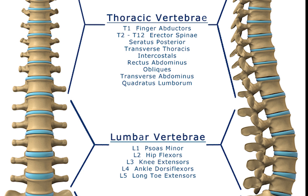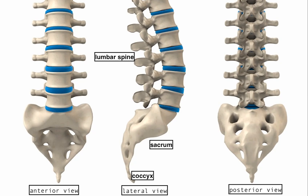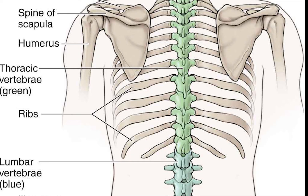The articulating vertebrae are named according to their region of the spine. There are 7 cervical vertebrae, 12 thoracic vertebrae, and 5 lumbar vertebrae. The number of those in the cervical region is only rarely changed, while that in the coccygeal region varies most. Excluding rare deviations, the total number of vertebrae ranges from 32 to 35. In about 10% of people, both the total number of presacral vertebrae and the number in individual parts of the spine can vary.